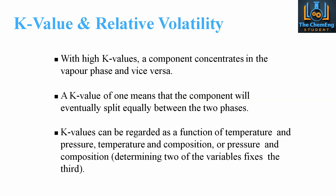The K values can be regarded as a function of temperature, pressure, and composition — fixing two of the three variables fixes the third. The vapor phase is highly dependent on temperature and pressure. Likewise, the composition of the mixture, if we are highly concentrated in liquid or vapor with different boiling points within the material, this will affect the K value for that specific component. By fixing two of these three, we can find the third value.